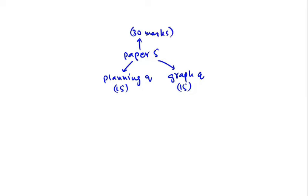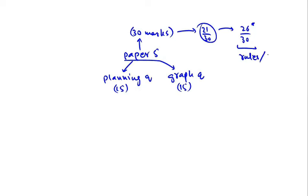The average grade threshold for an A grade in paper 5 is 21, and you can always score 21 marks very easily. Actually, you can always score 26 out of 30 in paper 5, but to do that you'll have to learn some rules, methods, and tips. In this 5-lesson crash course, I'll be teaching you all the rules, methods, formulas, and tips that cover both questions of paper 5 — the planning question and the graph question.